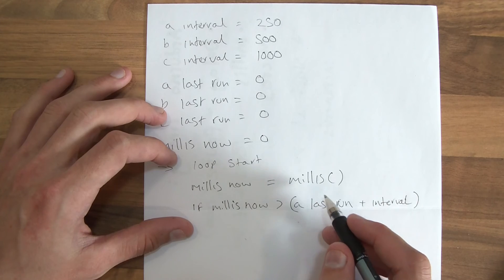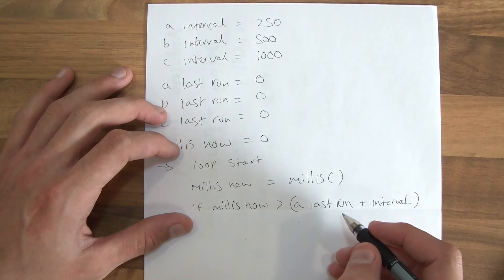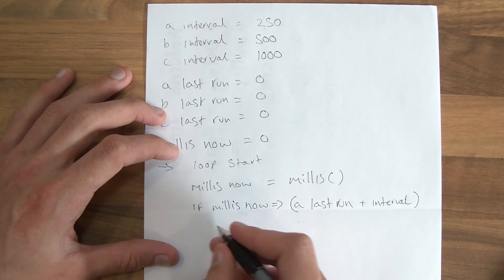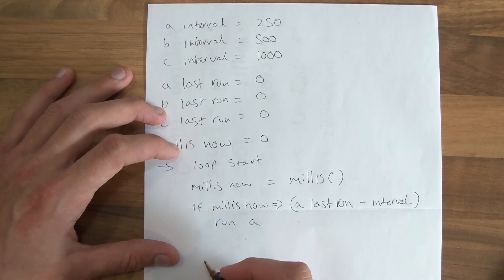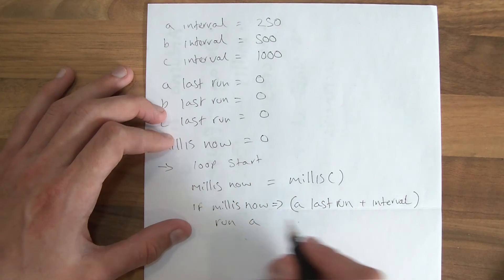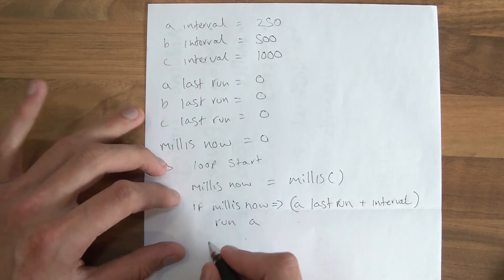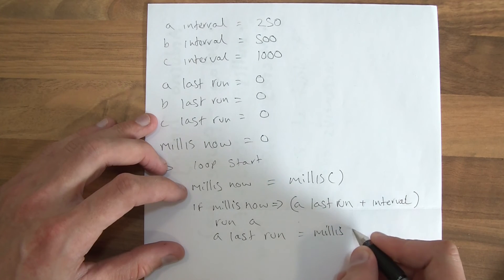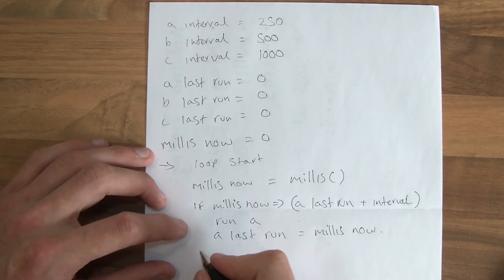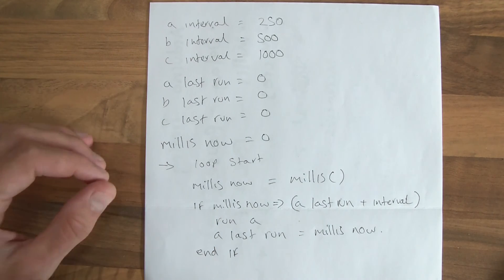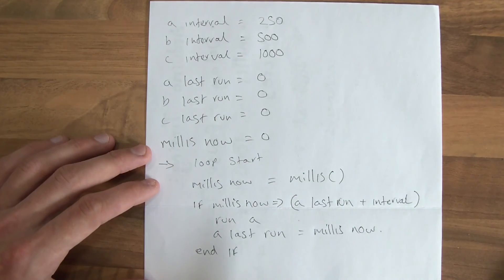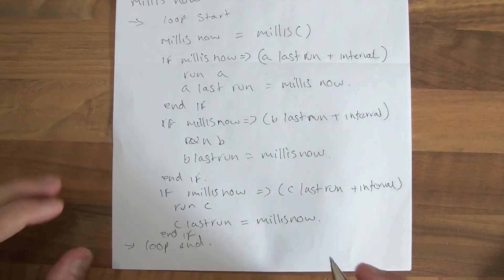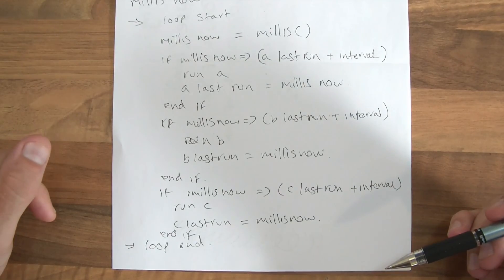You could say equals or greater there actually, but if it's time to run it, then run task A. Okay, so having run A, we need to now set the last run time. So a last run equals whatever millis now is, and then we'll end it there. So it's quite simple. So that's the first part, and now we pretty much just repeat that for all the rest of them. And really that's all there is to it. That's the way to manage time in the Arduino.